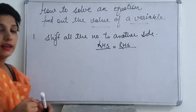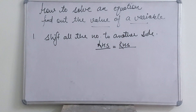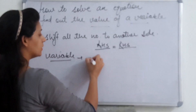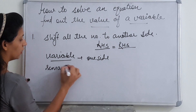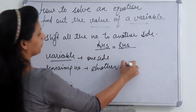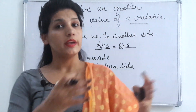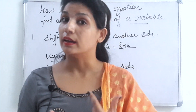The first step is to shift all numbers to the other side — meaning we keep our variable on one side and shift all remaining constant numbers to the other side. Variables and numbers must be separated: variables together on one side, all numbers shifted to the other side.